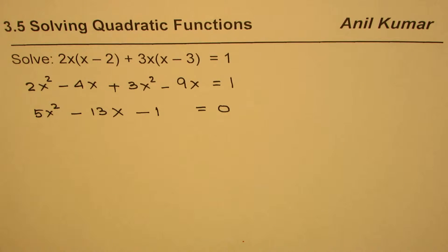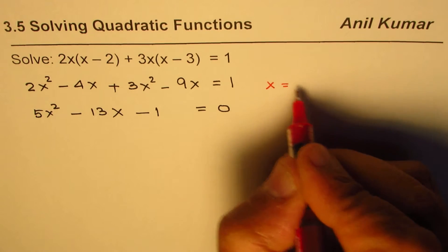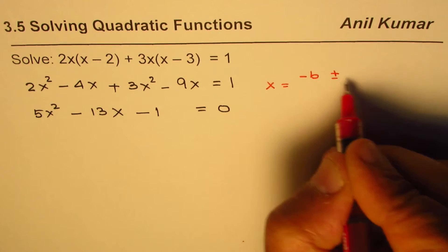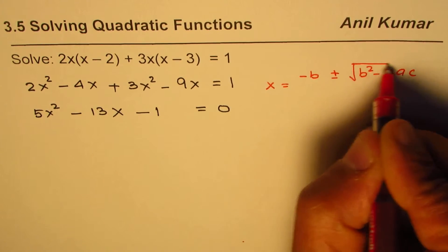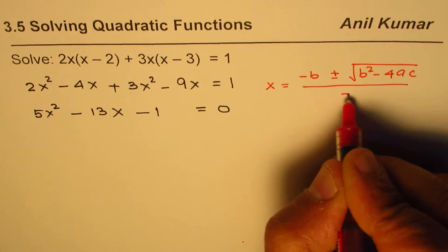Now, to solve this equation, we can use the quadratic formula. The quadratic formula is x equals minus b plus or minus square root of b squared minus 4ac divided by 2a.